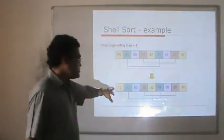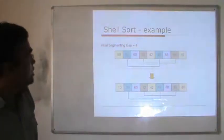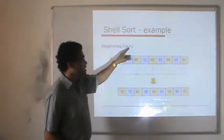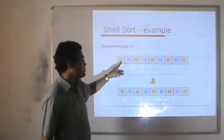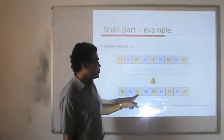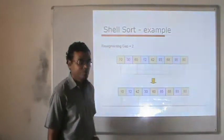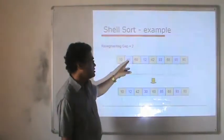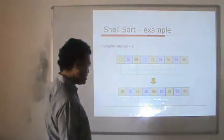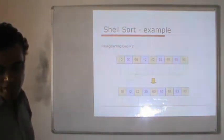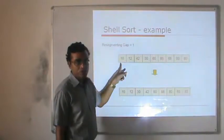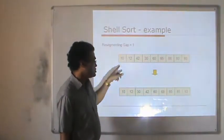Then this data is further sorted with another gap. Taking the previous slide's data, we find a gap of 2. With gap 2: 10, 60, 42, 68, 80 — sorted with another insertion sort, giving 10, 42, 60, 68, 80. The other segment: 30, 12, 93, 85 — sorted separately. Then we take a gap of 1. Taking the data from the previous slide, with gap 1 the data is sorted. We can see that we have data that is almost sorted, making it very easy to apply the final insertion sort.